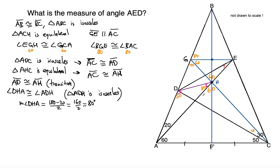Since GHE is 60 degrees and DHA is 80 degrees, to make a straight angle of 180 degrees this missing angle DHG has to be 180 minus the sum of 60 and 80. The sum of 60 and 80 is 140, so this angle has to be 40 degrees.